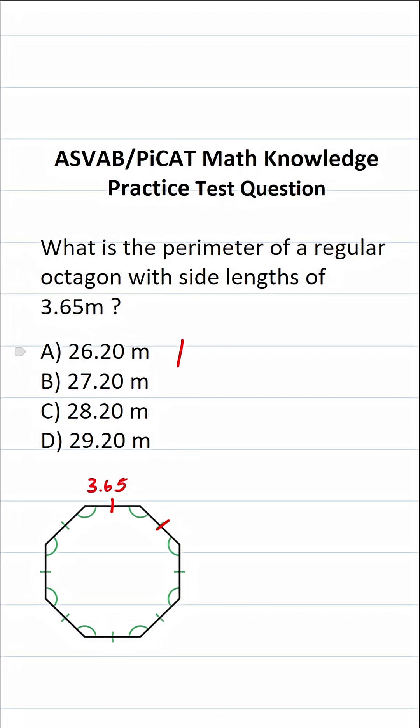Now, in order to find the perimeter of any regular polygon, including an octagon, all you do is add up all of its sides. Now, in this case, however, we know an octagon has eight sides, and we're just going to take eight and multiply that by the length of one of the sides, which is 3.65.